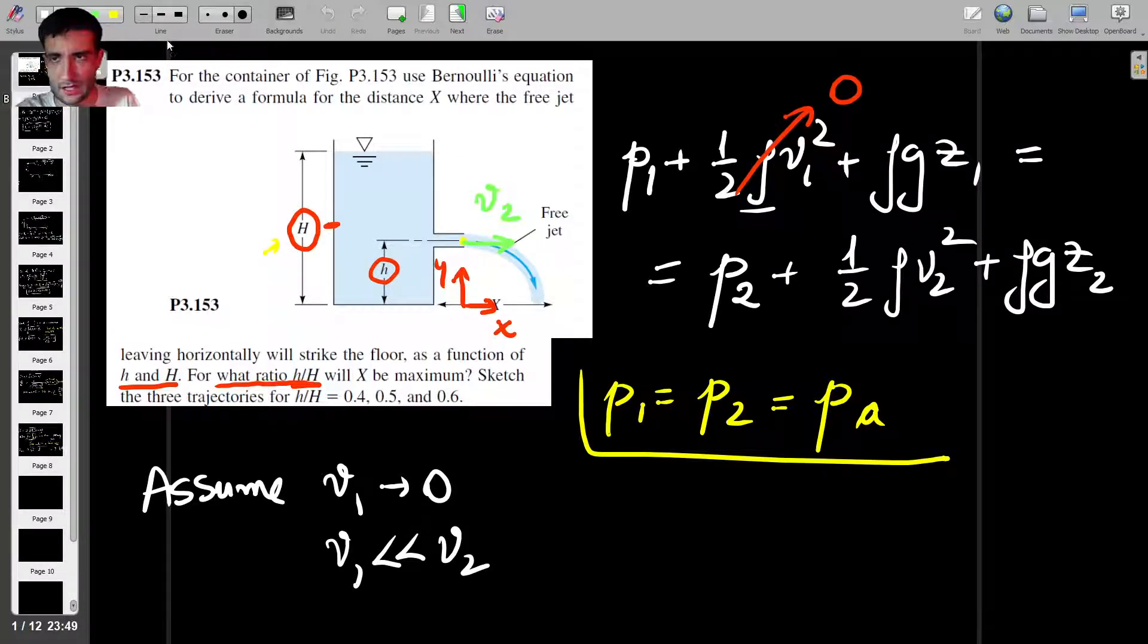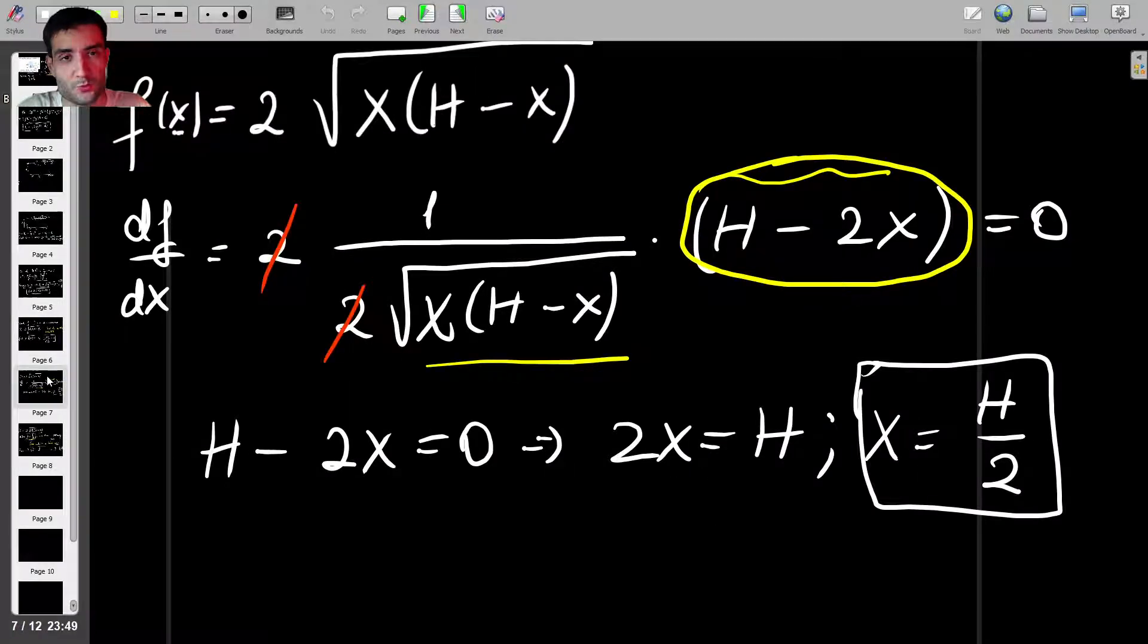And of course, from here on, you can do the last part of the question by yourself. You can sketch some plots for the case when h over H is either 0.4, 0.5, or 0.6. But that's the question, and yeah, I hope you found this interesting.